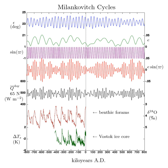The current trend of decreasing tilt, by itself, will promote milder seasons, as well as an overall cooling trend. Because most of the planet's snow and ice lies at high latitude, decreasing tilt may encourage the onset of an ice age for two reasons: there is less overall summer insolation, and also less insolation at higher latitudes, which melts less of the previous winter's snow and ice.